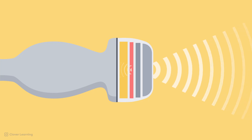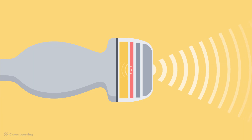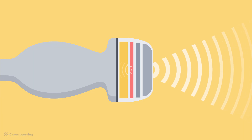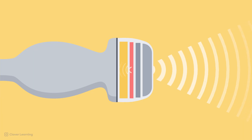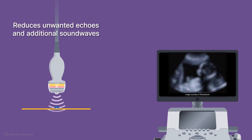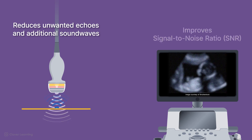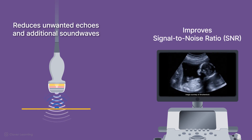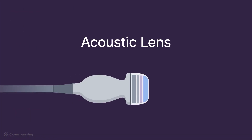Ringing effects and their relationship to the quality factor, or QF, will be discussed in another lesson. By absorbing the excess mechanical vibrations from the crystal immediately, it reduces unwanted echoes or additional sound waves that overlap with the returning echoes, which improves the signal-to-noise ratio, or SNR.